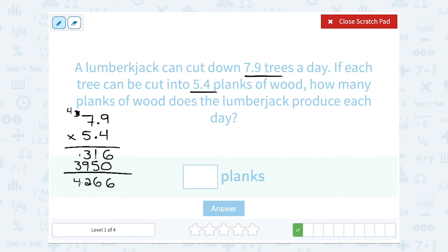Now notice, remember I said we were going to go back to those decimals at the end. In my original problem, I had 1 digit after the decimal point here, and 1 digit after the decimal point there. So altogether, 2 digits after the decimal point. So that means I need to make sure that my answer has 2 digits after the decimal point. So this would be 42.66 planks.